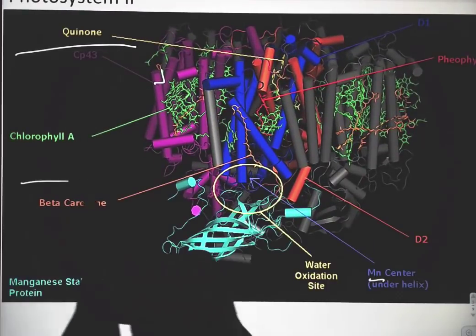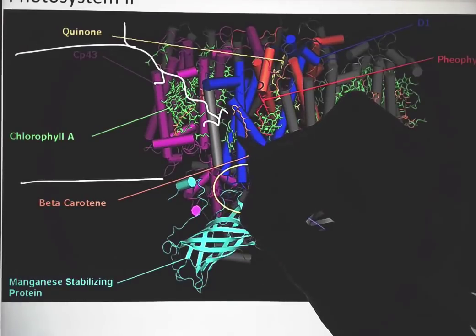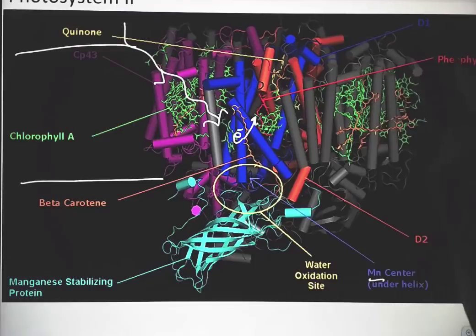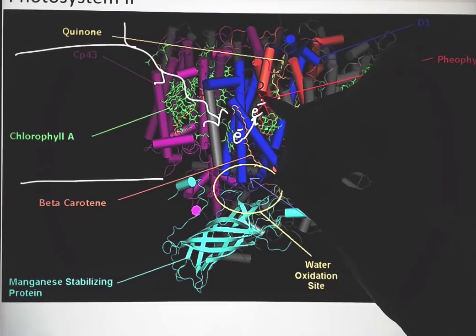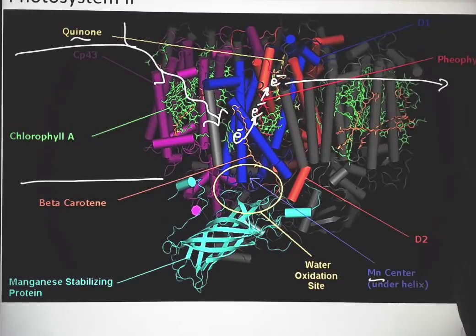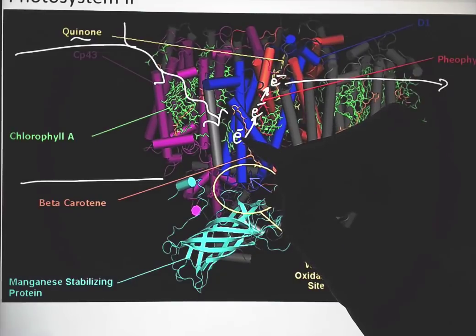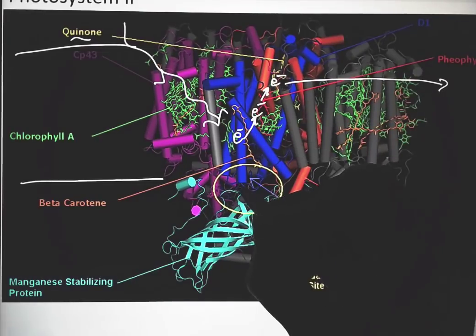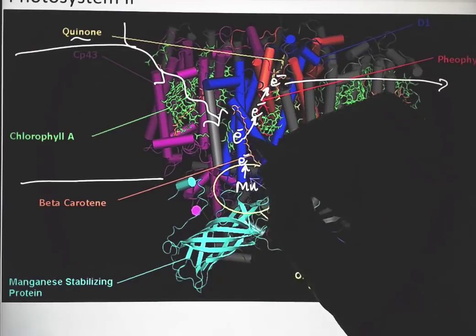Here is photosystem 2 with chlorophyll A. Energy in pops an electron up to a carrier pheophytin, then it gets passed to quinone and out of photosystem 2. The loss of an electron from the chlorophyll has to be replaced. There's a manganese metal ion here that can pass an electron to an amino acid, which in turn can give it back to the chlorophyll A.